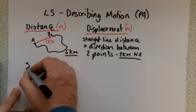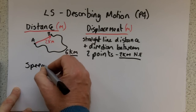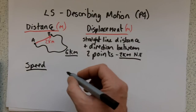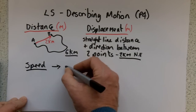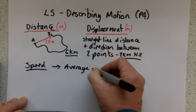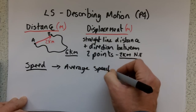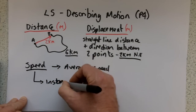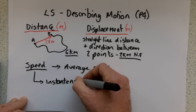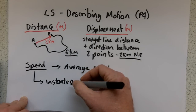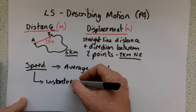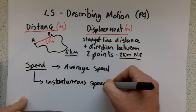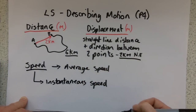So, speed. The speed of an object can be thought of in two ways: we can think of the average speed or the instantaneous speed. So average speed versus instantaneous speed.